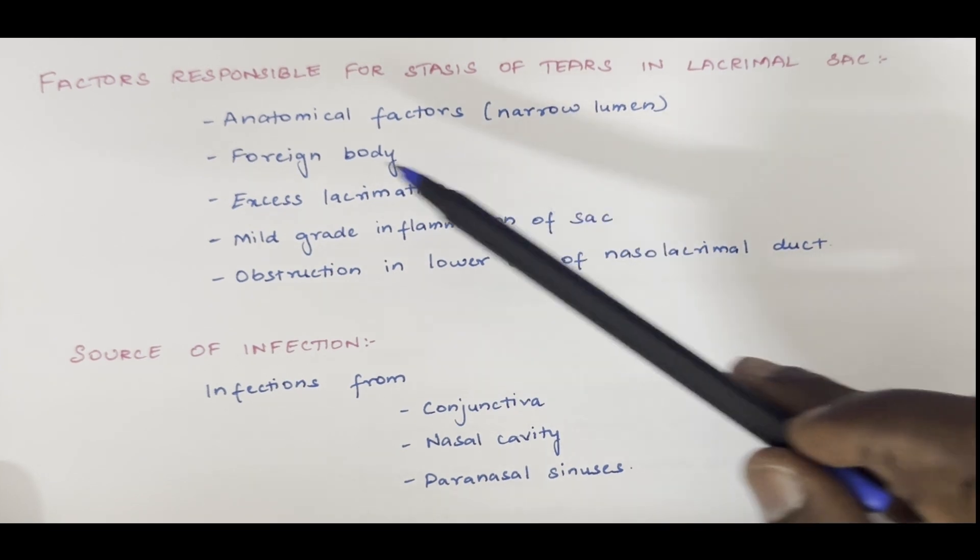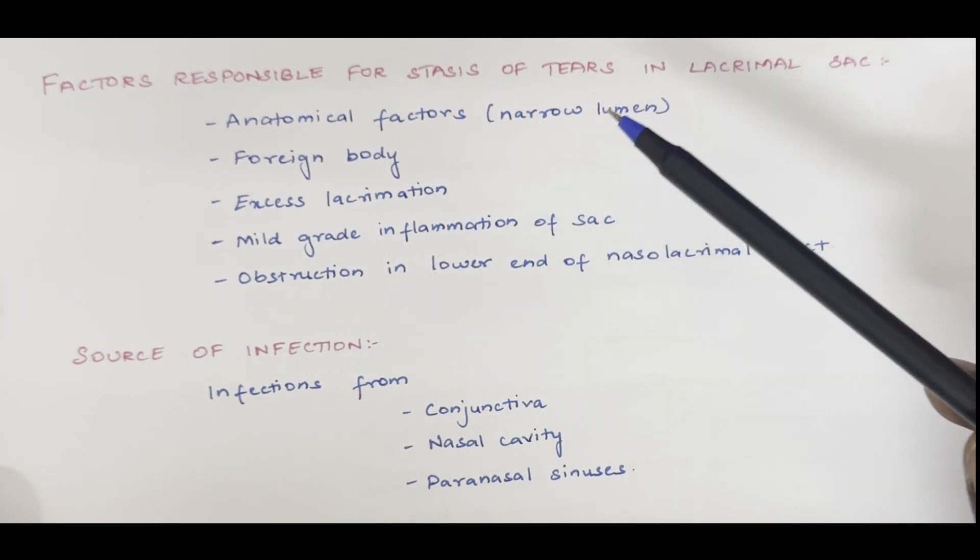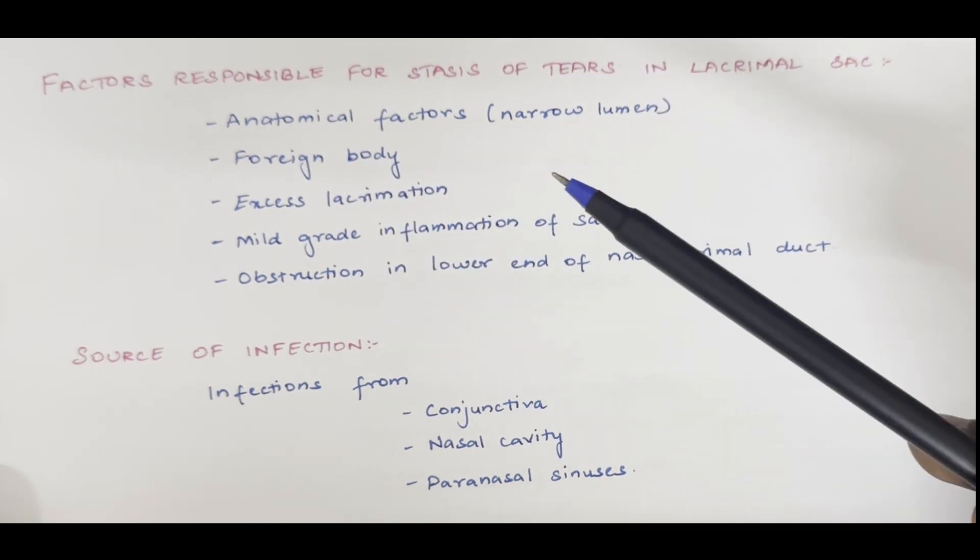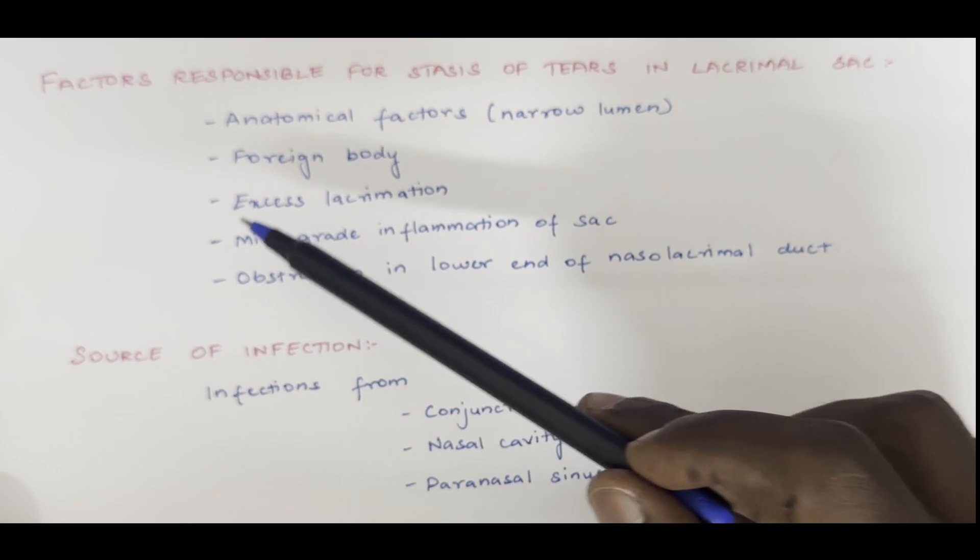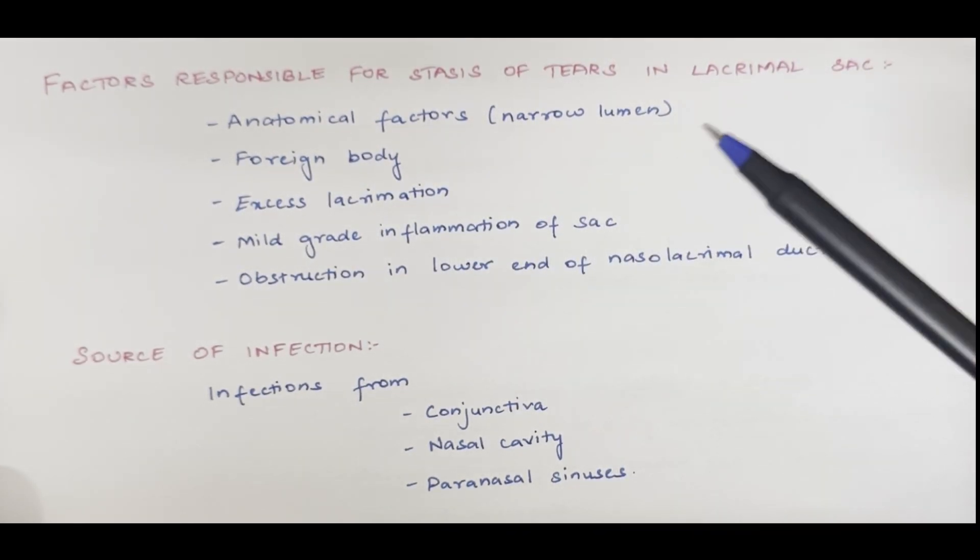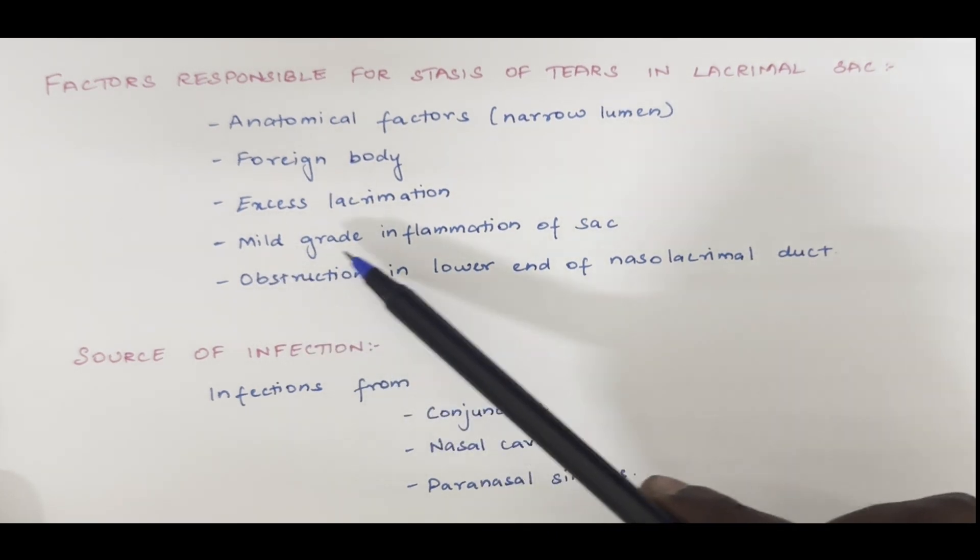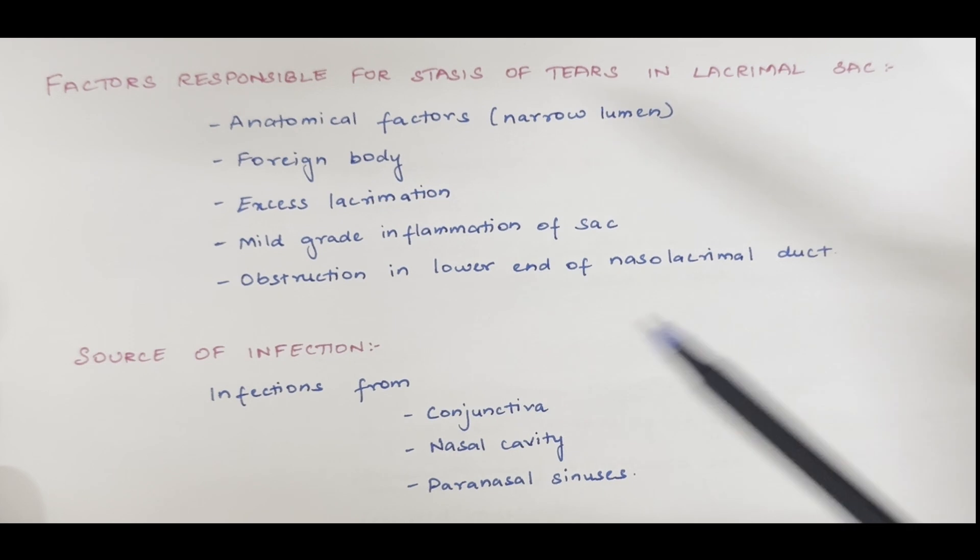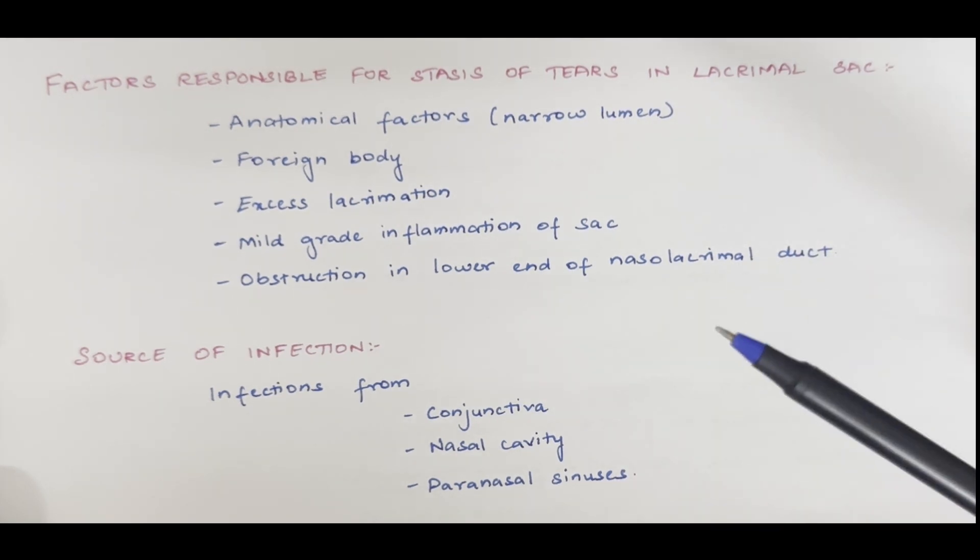In obstruction there can be anatomical factors like narrow lumen which is genetic and there can be foreign body obstruction. Excess lacrimation can cause stasis of tears in lacrimal sac. Mild grade inflammation of sac and obstruction in the lower end of nasolacrimal duct can also cause stasis of tear in the lacrimal sac.